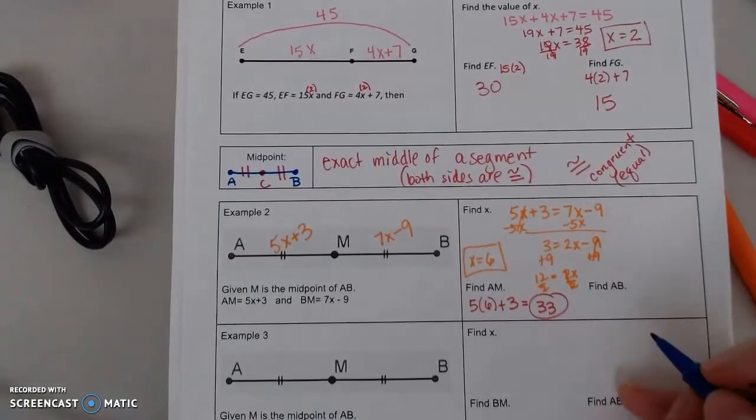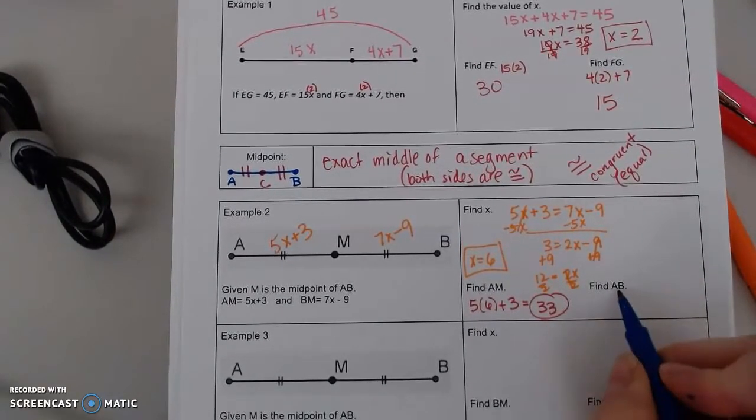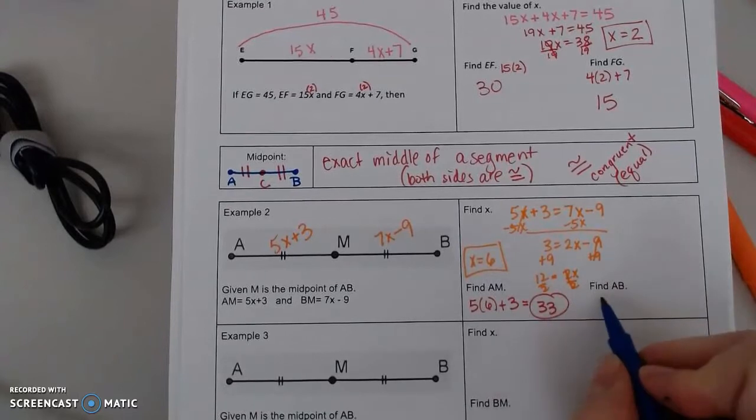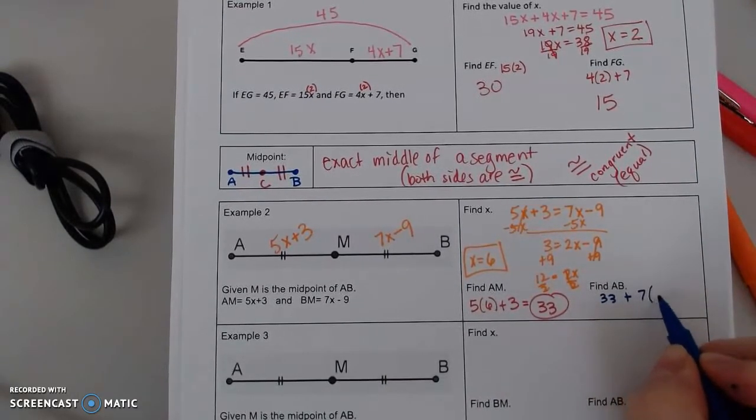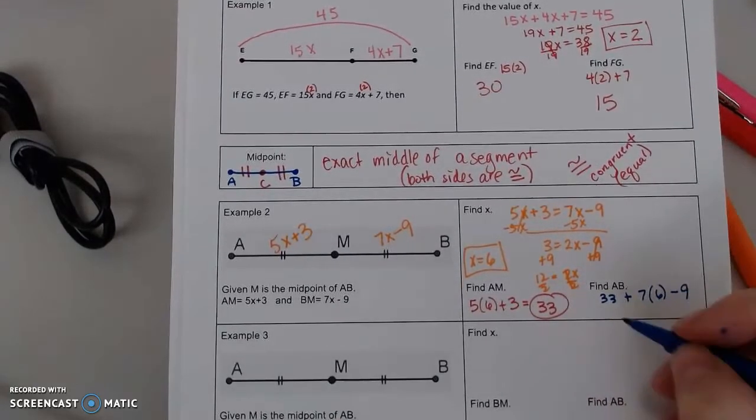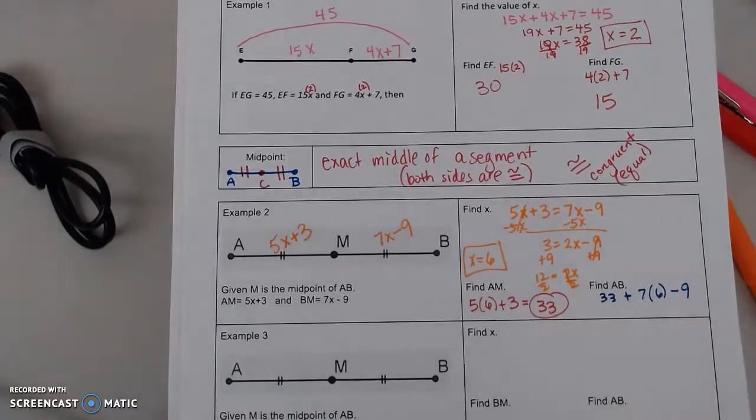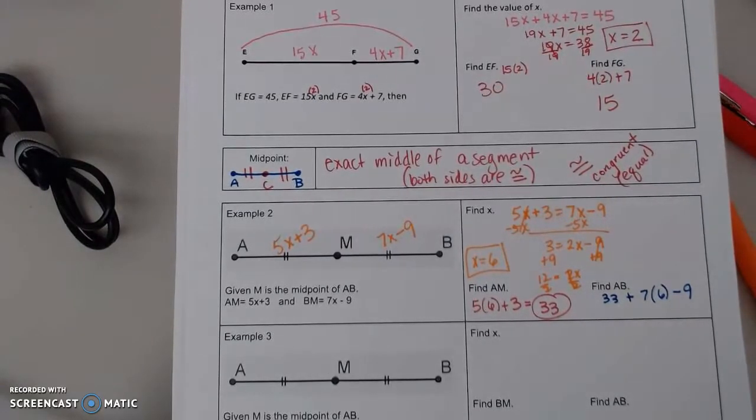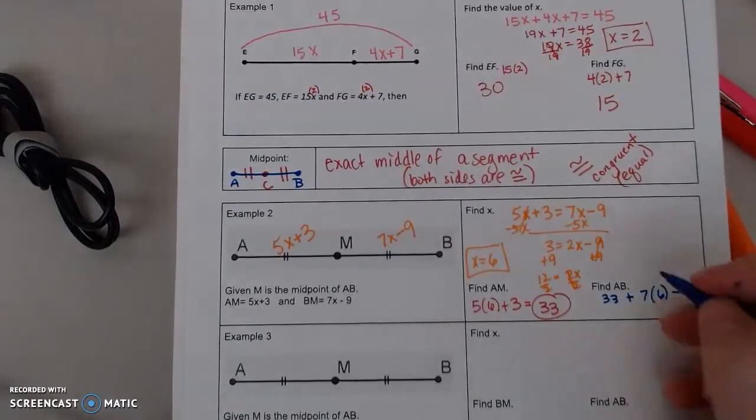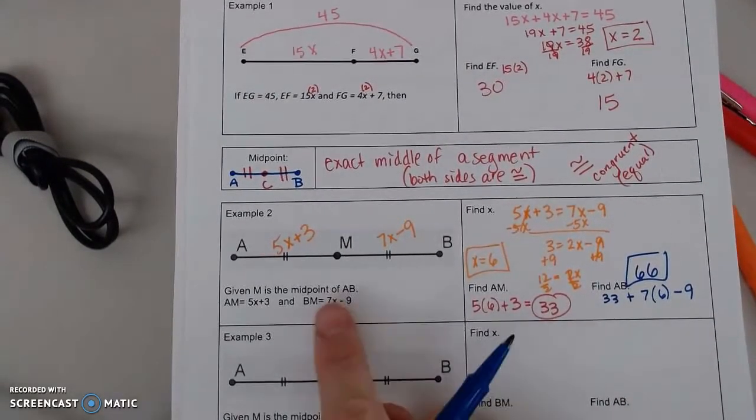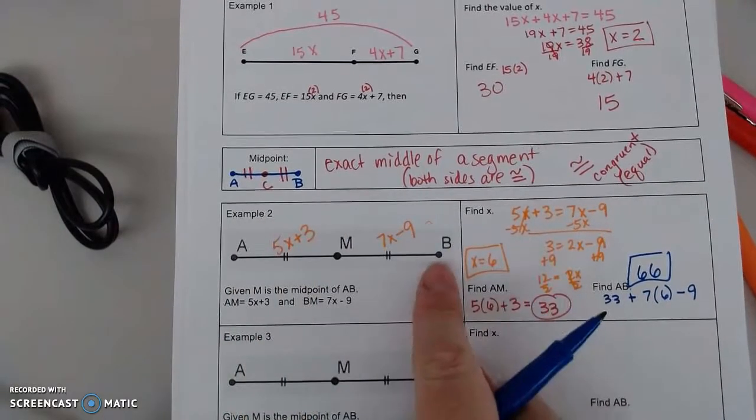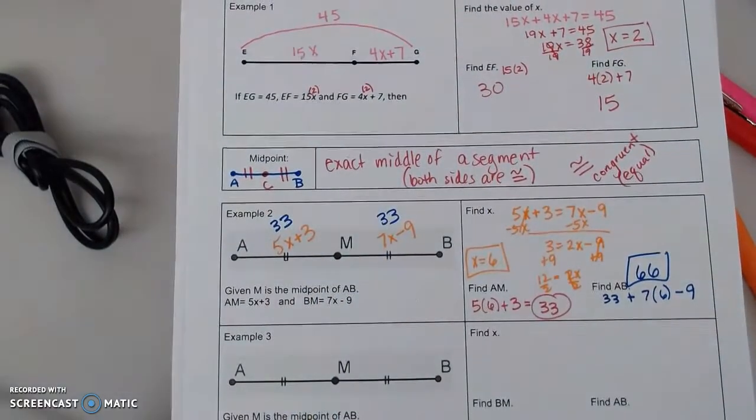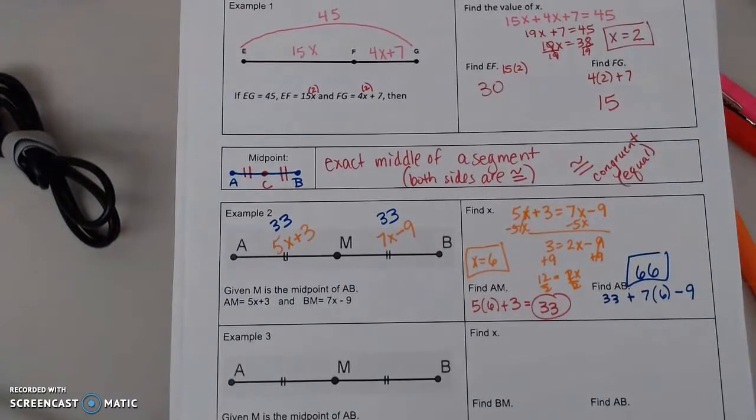And for AB, AB now is the whole thing. So I've got, I know AM was 33, plus I need to find 7X minus 9. So I've got 33 plus 42 minus 9. Type that into a calculator. This is what I'm talking about. Make sure you pay attention to the letters. Because they didn't just want BM. They wanted AB, which was the whole thing. Also, remember, if the left side is 33, and I know these are equal, the right side is 33. So we could have done it that way as well. Lots of options.